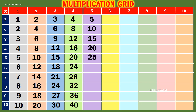5 5s are 25. 5 6s are 30. 5 7s are 35. 5 8s are 40. 5 9s are 45. 5 10s are 50.